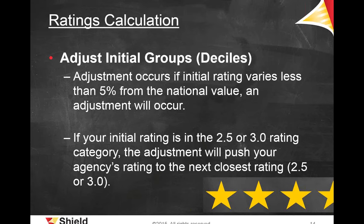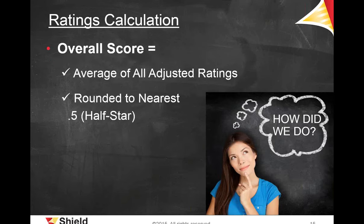If the calculation produces a result between two rating groups, the rating will be adjusted up if a difference of 0.05 is found. If the difference is less than 0.05, your agency will keep the initial rating. Each measure is broken up into ten deciles assigned numeric values in 0.5 increments from 0.5 to 5. If one of the ratings is in the middle of two stars, the rating will be adjusted up to the next grouping if the difference is greater than 0.05.